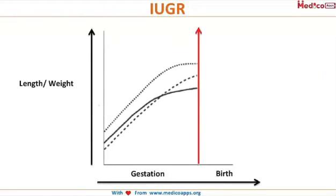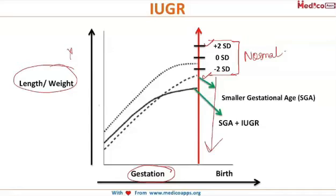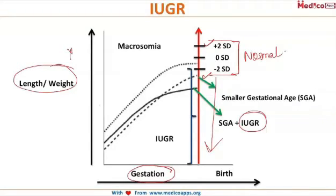Now we'll understand this definition of IUGR plotted on a graph. If the x-axis shows gestational age and the y-axis shows the length or weight of the baby, then two standard deviations above and two standard deviations below the mean are considered normal. If the weight of the fetus is more than two standard deviations below the mean, it is called IUGR, and if it is more than two standard deviations above, it is considered macrosomia.